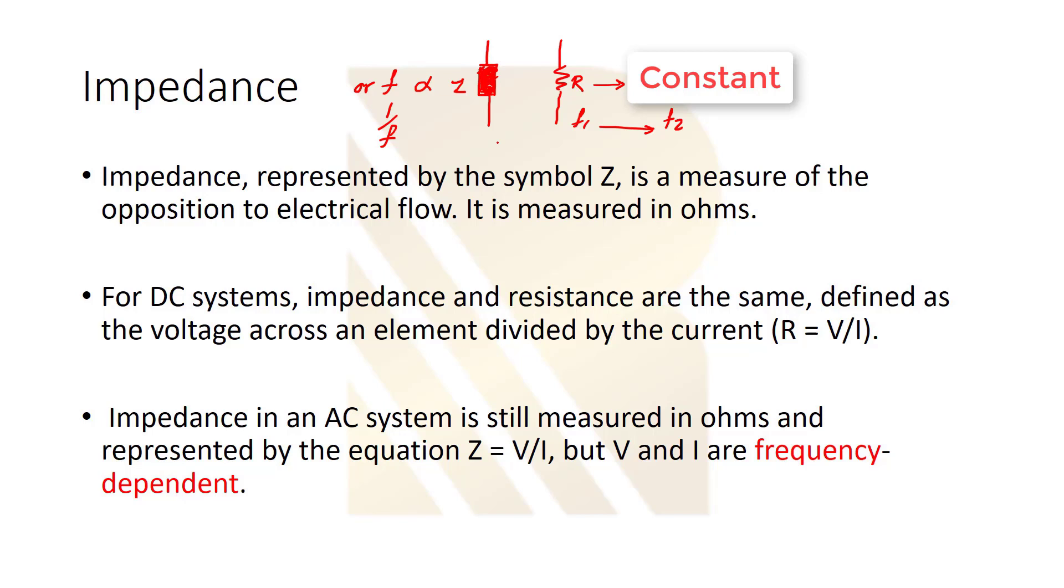You don't have to worry about this, but you have to keep this in mind. So for DC systems, impedance and resistance are the same, defined as the voltage across an element divided by the current. As we talked before, now for a DC system it means that our frequency is zero. In DC system we don't have frequency, so it's constant. Now in the DC system, Z is equal to R. So basically when we are talking about DC, we don't have a definition of impedance, we can call it resistance. And impedance in an AC system is measured in ohms and represented by equation Z is equal to V over I. But V and I are frequency dependent. We are going to talk about this in the phasor part. So now we know that Z is also equal to V over I, so it's basically something like resistance.